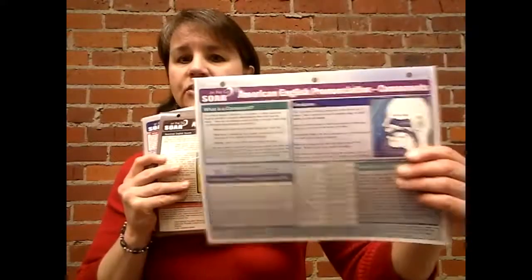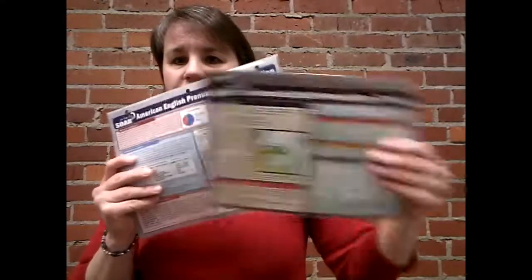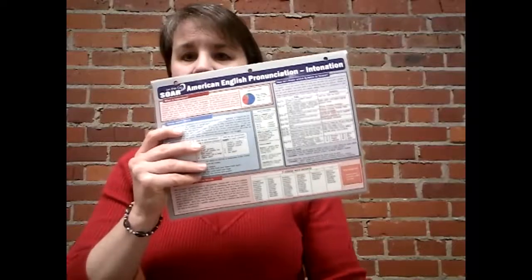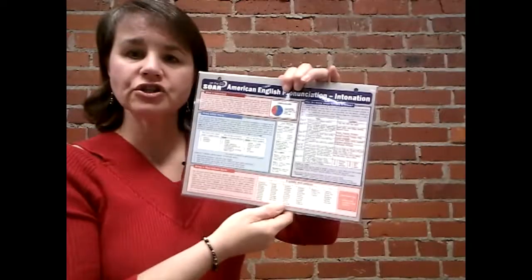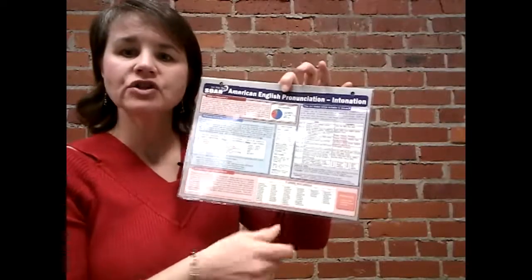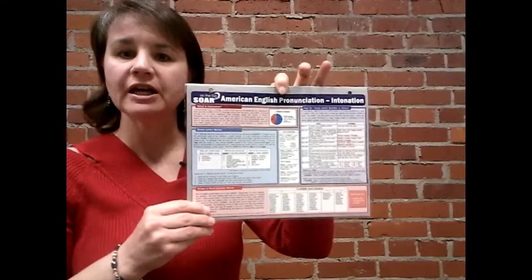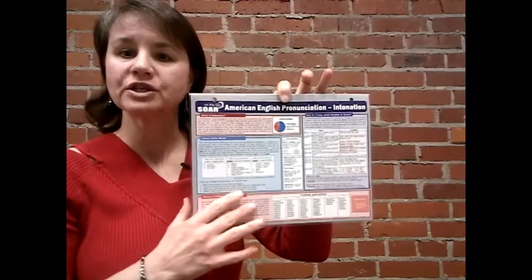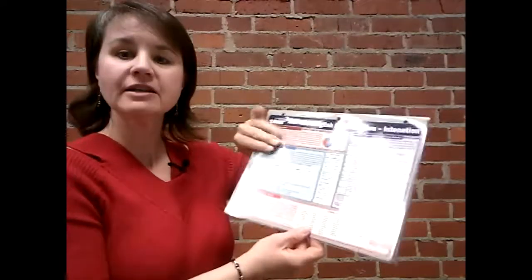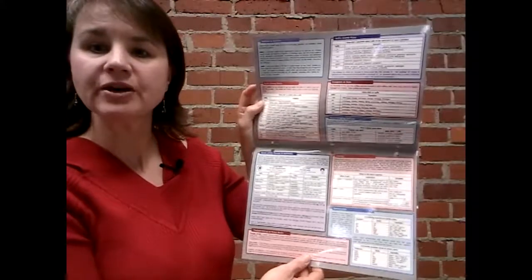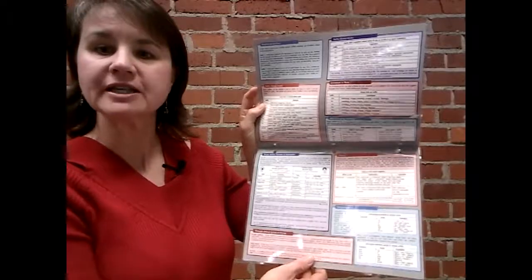There is a consonants chart, a vowels chart, and an intonation chart. The intonation chart covers all aspects of American English intonation. It has word stress patterns, sentence stress, linking, contractions, reductions, and other little-known rules for American English pronunciation.